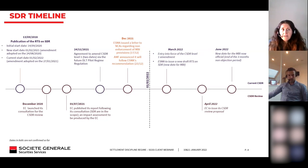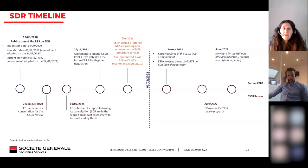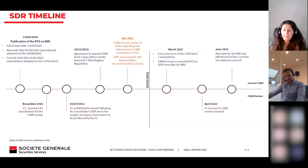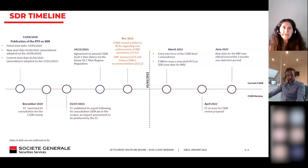We do not yet know what the new date will be, but we expect a postponement of around two to three years. The important point is the gray zone that will exist between the first of February — when the current settlement discipline regime enters into force — and somewhere around June. That is why ESMA wrote a letter to national competent authorities in December requesting them not to focus their supervisory tasks on the correct application of the mandatory buy-in regime. The AMF quickly confirmed they intend to follow ESMA's recommendation.